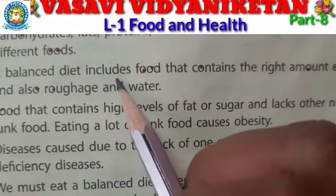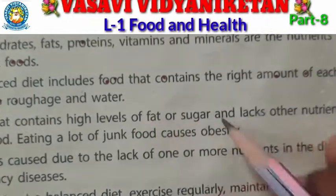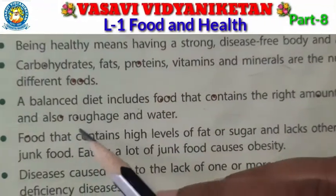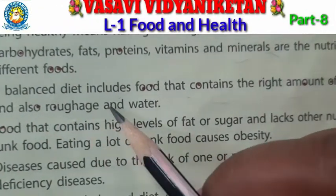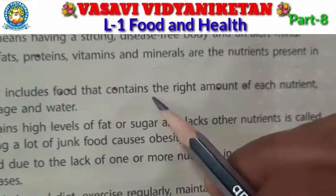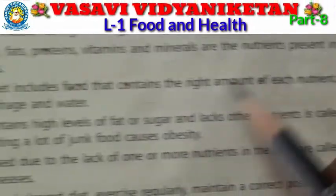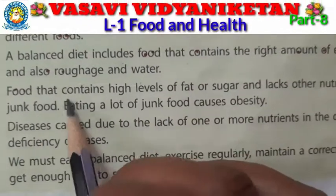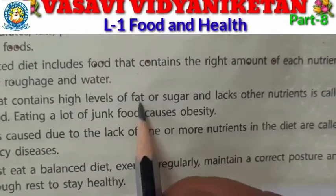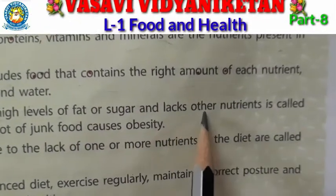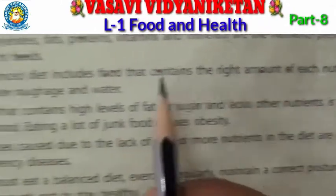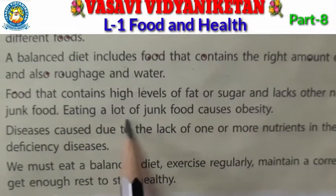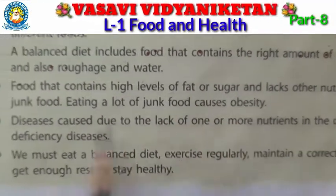A balanced diet includes food that contains the right amount of each nutrient and also roughage and water. Food that contains high levels of fat or sugar and lacks other nutrients is called junk food. Eating a lot of junk food causes obesity.